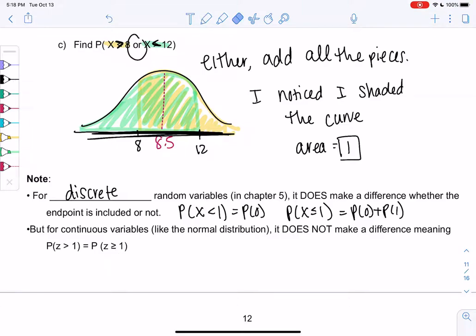So for discrete random variables it does make a difference whether endpoint is included or not. But for continuous data like normal distribution it does not make a difference. So P of Z greater than 1 would actually be the same as greater than or equal to 1. It's only for continuous data.